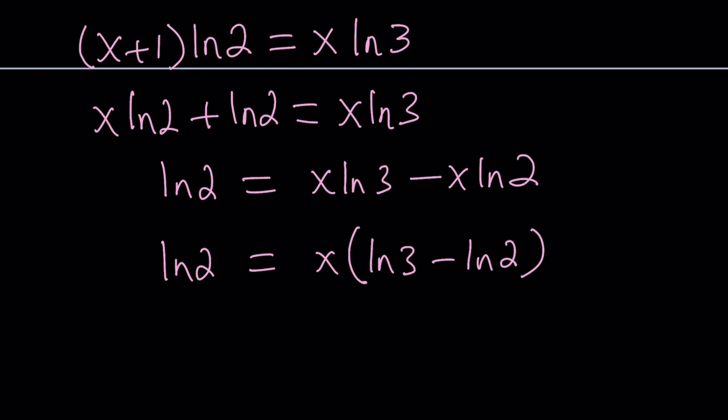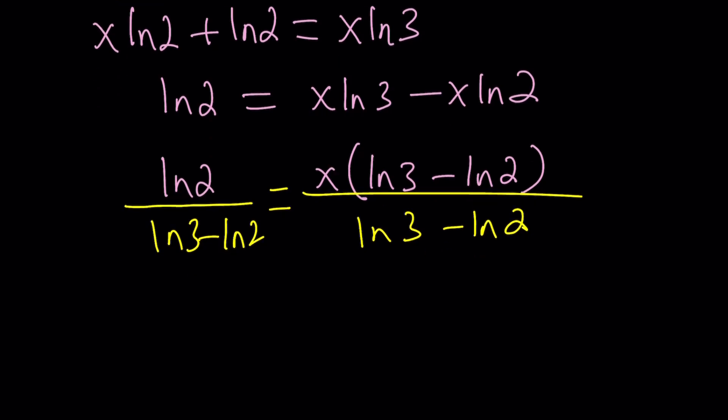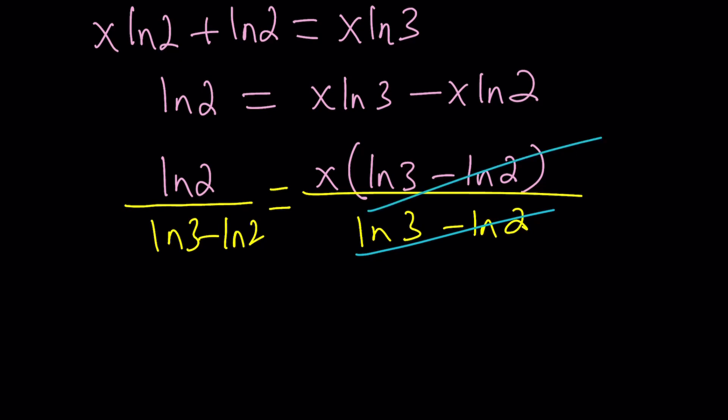Let's go ahead and put the x's on the same side. By subtraction, we get ln 2 = x ln 3 - x ln 2. I could write this on the left-hand side, but that's okay. You should be able to solve either way. Now, at this point, what would you do? Since x is a common factor, you should definitely take the x out. And then, divide both sides by ln 3 - ln 2 to get the x by itself.